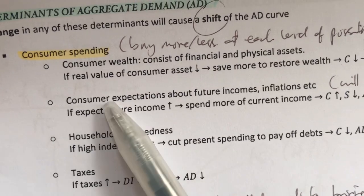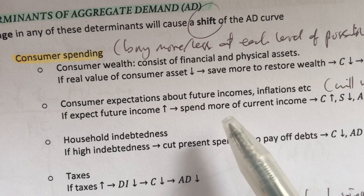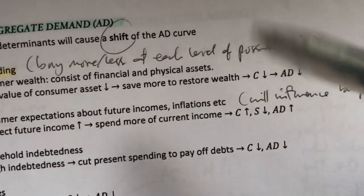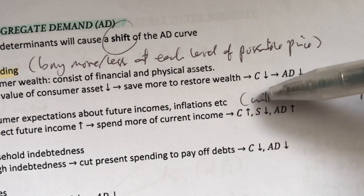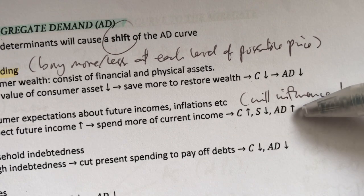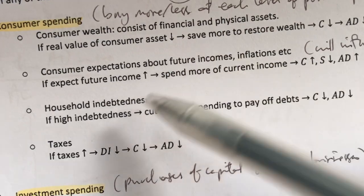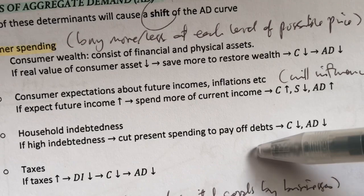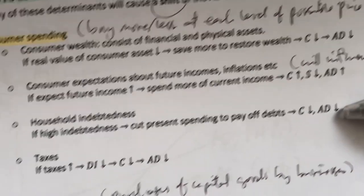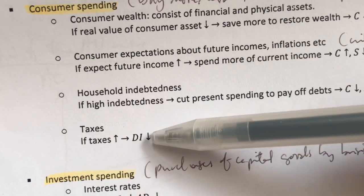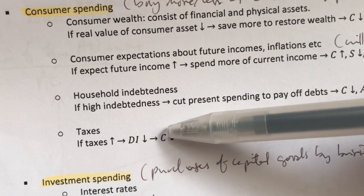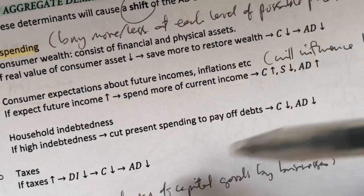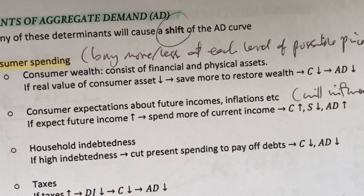The next point is consumer expectations. When people expect their future incomes will improve, they want to spend now because in the future they'll be able to get their money back. So when consumption increases, savings will fall, meaning the aggregate demand curve shifts to the right. Next is household indebtedness. If there's high debt, people have lesser inclination to spend because they want to pay off their debts — lower consumption, lower AD, shift to the left. Another point is taxes. If personal taxes increase, we have lesser disposable income, meaning lesser consumption, which means a fall in AD.